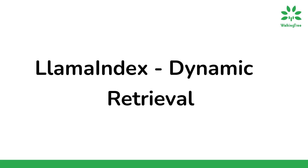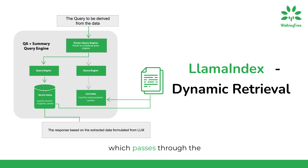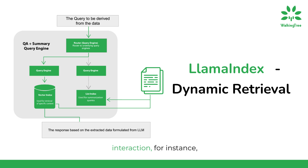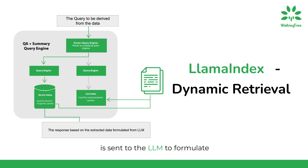In this section, we present a visual journey of dynamic retrieval with LlamaIndex. It all starts with the query, which passes through the router and query engine, followed by various query engines. These engines guide the interaction — for instance, leading to a vector index for specific content retrieval or going through a list index for summarized extraction, leading to the relevant node for content. Finally, the relevant extracted content is sent to the LLM to formulate an appropriate response for the query.